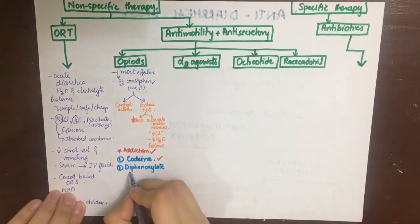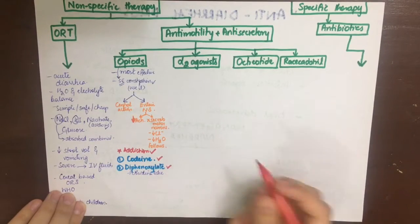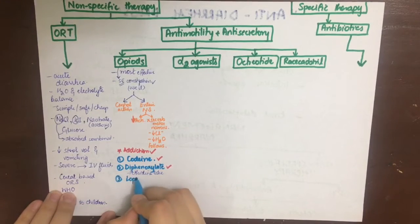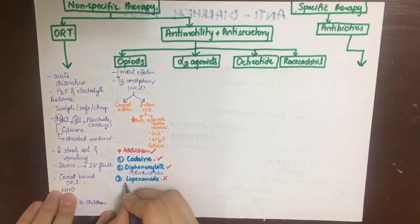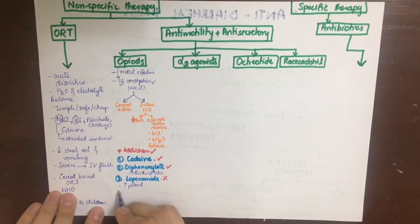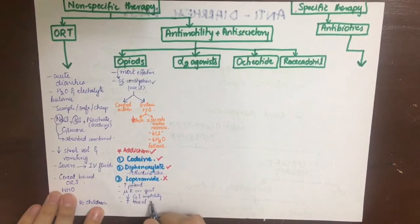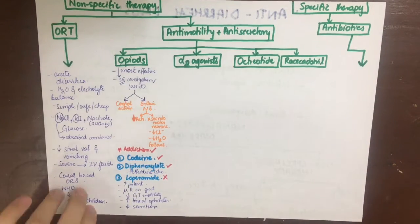Codeine has the potential to be abused, and so does diphenoxylate — it is even banned in some countries. Loperamide is related to pethidine and is more potent than morphine. It acts on mu receptors in the gut, decreasing GI motility and increasing sphincter tone. The good thing about loperamide is it has no abuse potential. It also decreases secretion, and both acute and chronic diarrhea can be managed with it.